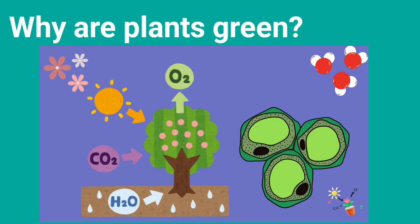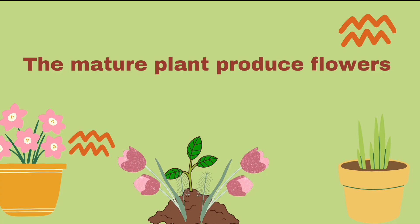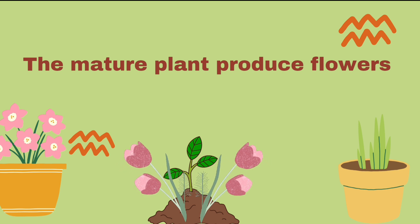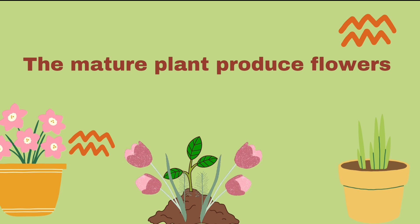The process of photosynthesis produces oxygen, which is released by the plant into the air. Chlorophyll gives plants their green color because it doesn't absorb the green wavelength of light. Green light is not generally absorbed by plants because its wavelength doesn't fulfill the minimum requirements for photosynthesis, making it inefficient. The mature plants produce flowers, which ensures that the life cycle continues.